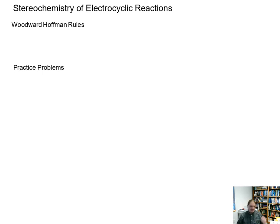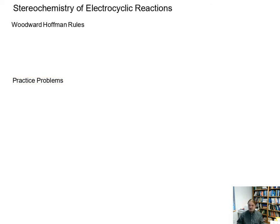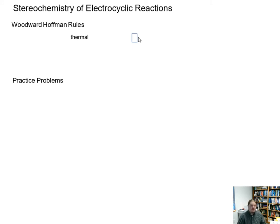In two videos prior to this, linked in the description below, I introduced the stereochemical outcome of electrocyclic reactions under thermal conditions and under photochemical conditions. The summary of these observations and stereo selectivity are summarized as the Woodward-Hoffman rules. Woodward and Hoffman did this work decades ago and ultimately received a Nobel Prize for helping understand the mechanisms and stereochemistry of pericyclic reactions, not just electrocyclic reactions.